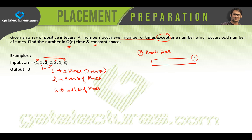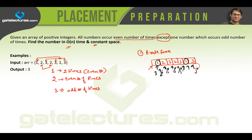In the brute force technique, you take an array with some numbers like 1, 2, 3, 2, 3, 1, 3. You use two variables i and j. You increment j every time through the inner loop to count how many times a given element is occurring. After the end of the inner loop, you check whether the count is even or odd. If the number is occurring an even number of times, you continue with the next i. Otherwise you break and report that number. This brute force technique takes time complexity O(n²) but space complexity O(1).